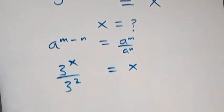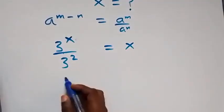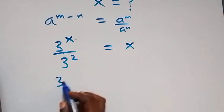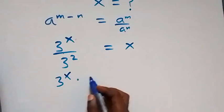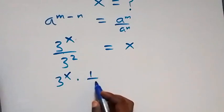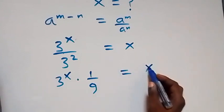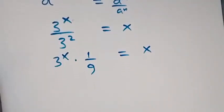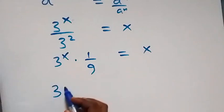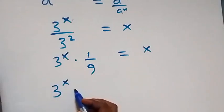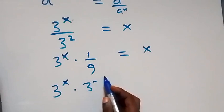From here we can separate this as 3 raised to power x times 1 over 3 squared. And 3 squared is 3 times 3, which is 9. So this now equals x. From here, let's multiply both sides by 3 raised to power minus x. We have 3 raised to power x times 3 raised to power minus x.